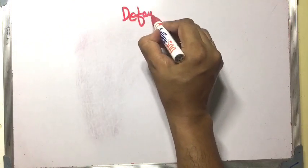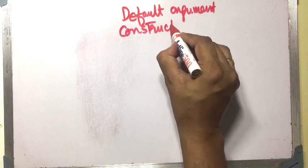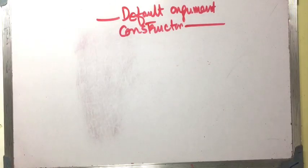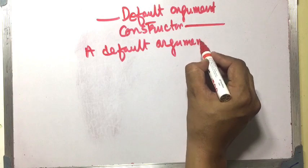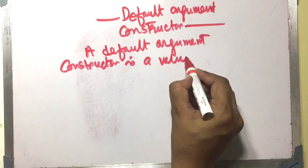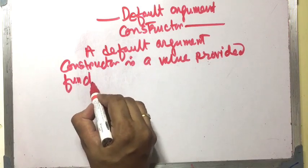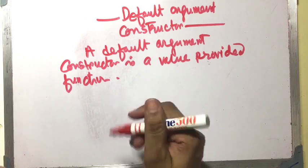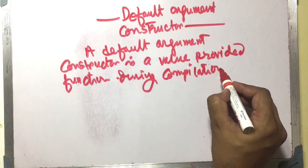Hi everybody. I am going to discuss the default argument constructor. The subject is C++ default argument constructor. A default argument constructor is a value provided function during the compilation.